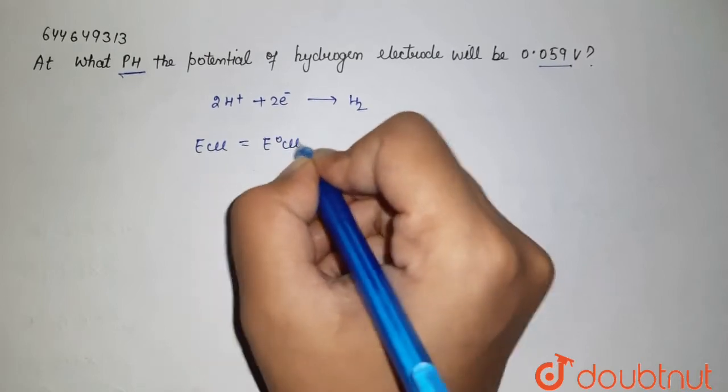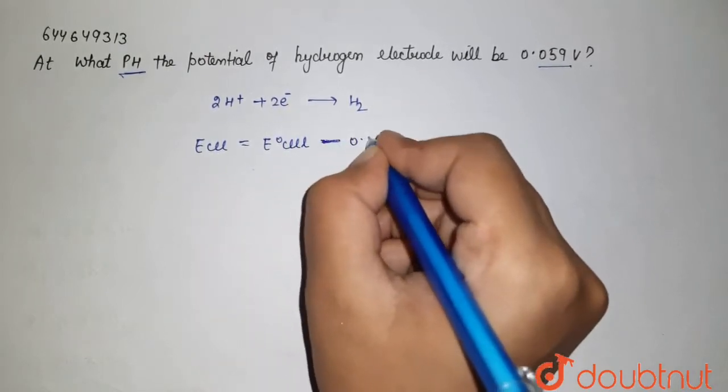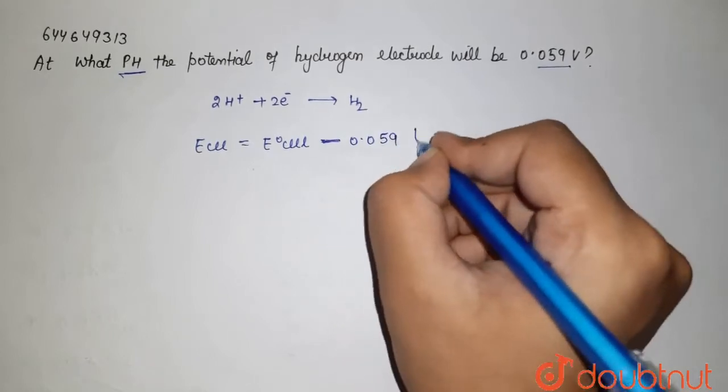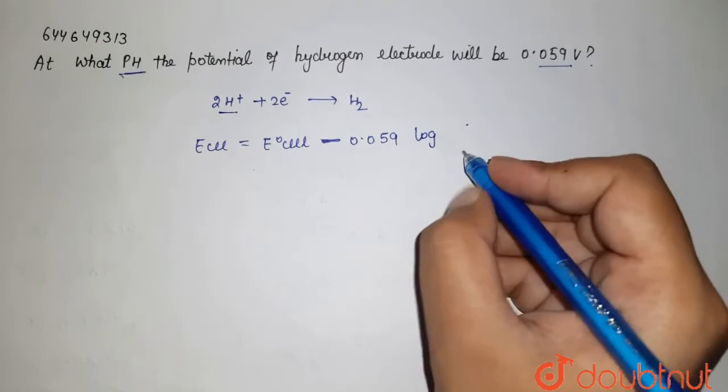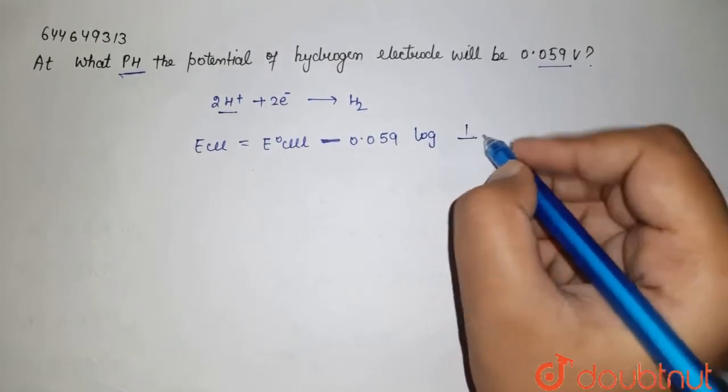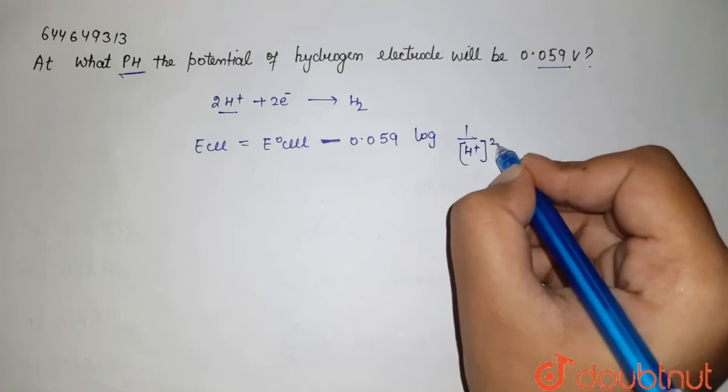minus 0.059 over n times log, where we have concentration terms, that is 1 over [H⁺] squared.